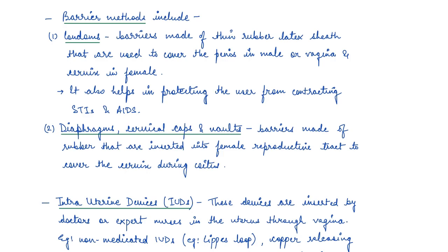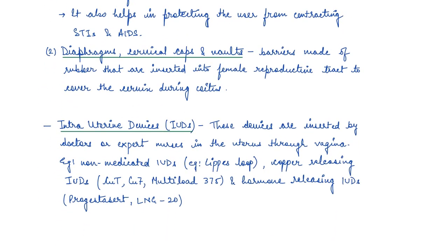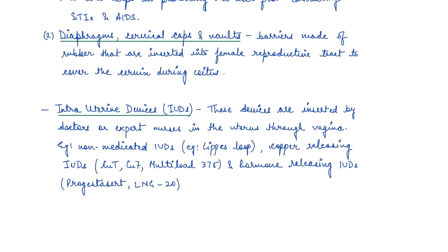The third type of method is IUDs — Intrauterine Devices. These devices are inserted by doctors or expert nurses into the uterus through the vagina. There are different types: non-medicated IUDs like Lippes Loop, copper-releasing IUDs, and hormone-releasing IUDs.